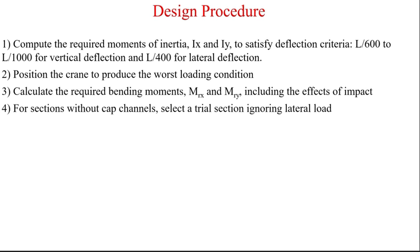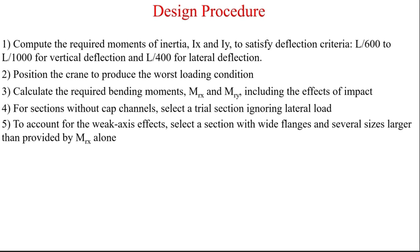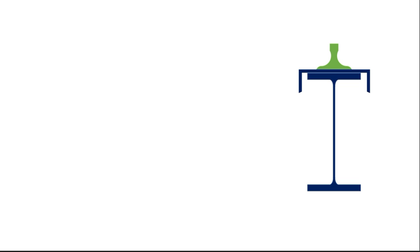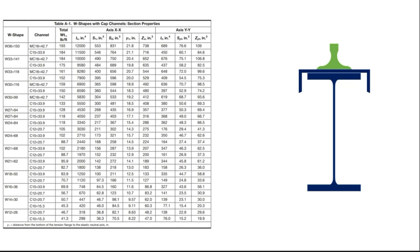For sections without cap channels, select a trial section ignoring lateral load. To account for weak axis effects, select a section with wide flanges and several sizes larger than provided by MRX alone. For sections with cap channels, the appendix tables in AISC Design Guide 7 may be of assistance. If ASTM A36 cap channels are used on ASTM A992 steel beams, then lateral torsional buckling requirements must be based on the ASTM A36 material as well as the weak axis strength.